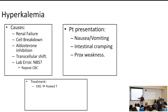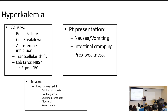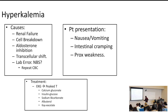To shift potassium out of the plasma, give insulin and glucose — because beta agonism pushes potassium into cells, and insulin is a beta agonist. Give glucose with it so the patient doesn't become hypoglycemic. Give sodium bicarb to promote the transcellular shift. Albuterol is also a beta agonist that pushes potassium into cells. To actually remove potassium from the body, give diuretics or Kayexalate, which is a potassium binder that allows you to excrete potassium.